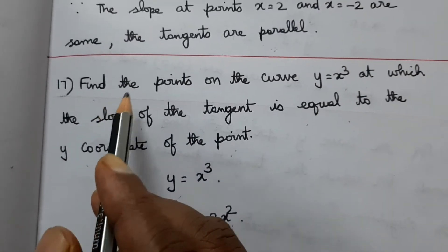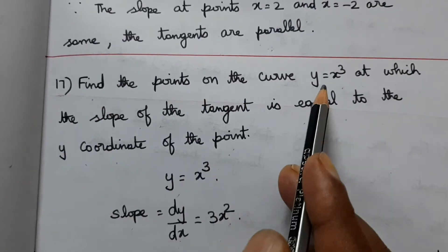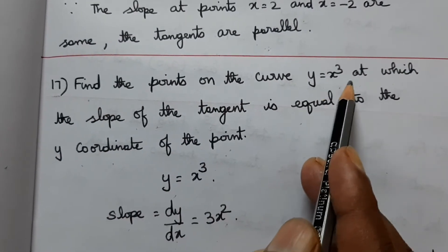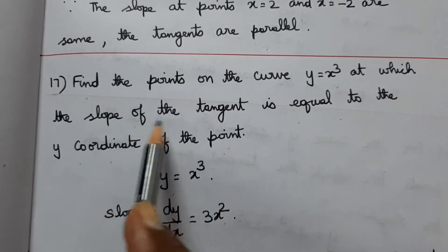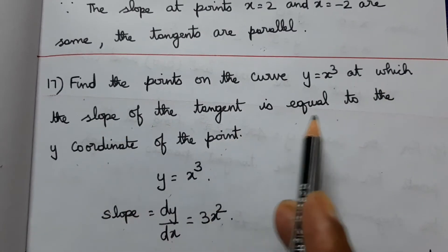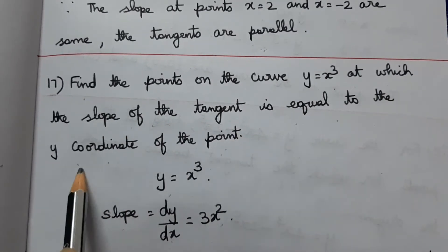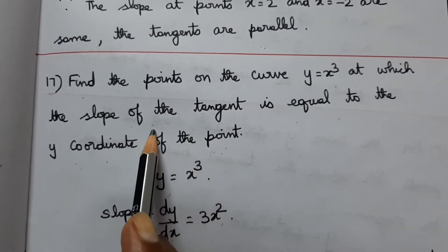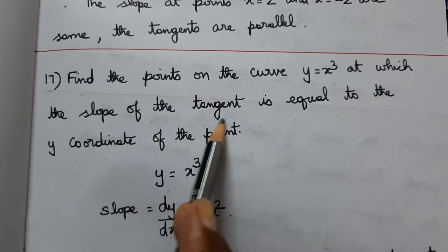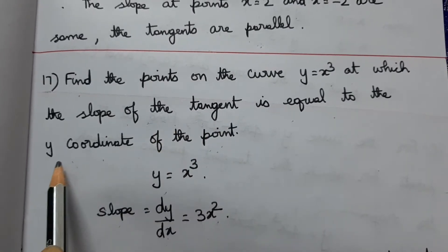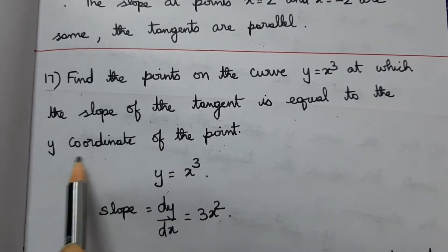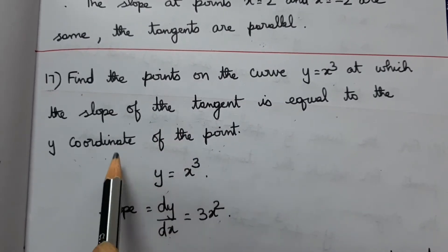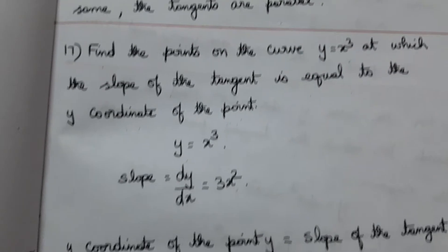Problem 17: Find the points on the curve y = x³ at which the slope of the tangent equals the y-coordinate of the point. The condition is that the slope of the tangent equals the y-coordinate.